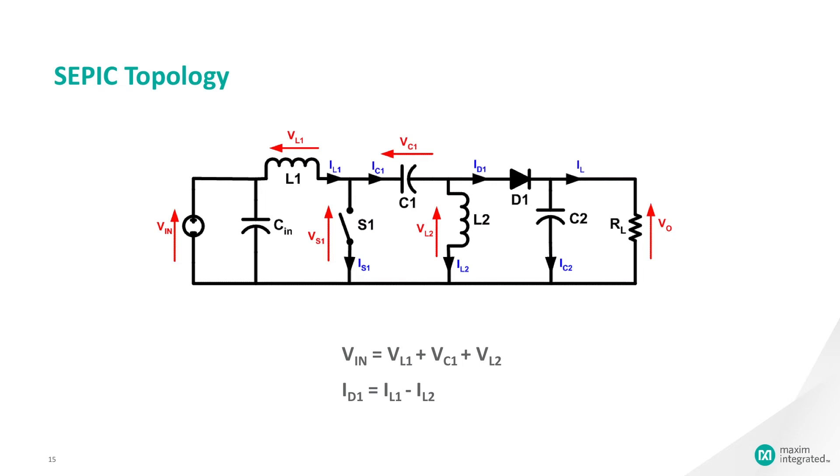Looking at the average voltages, the following can be written. VN equals VL1 plus VC1 plus VL2. Because the average voltage of VC1 is equal to VN, VL1 is equal to minus VL2. For this reason, the two inductors can be wound on the same core. Since the voltages are the same in magnitude, their effects of the mutual inductance will be zero, assuming the polarity of the windings is correct.